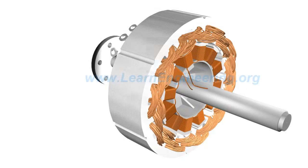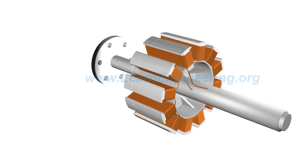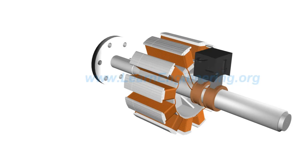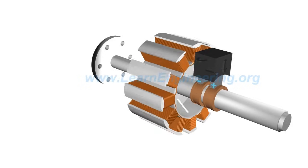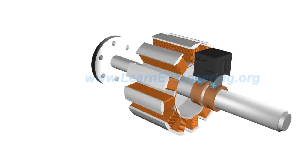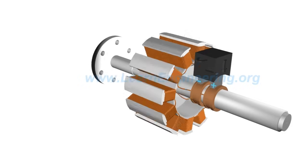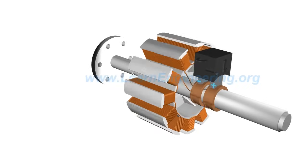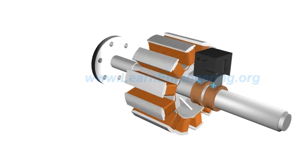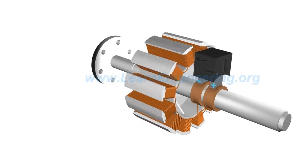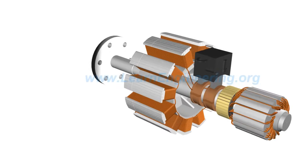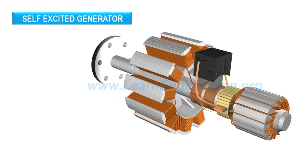DC current is supplied to the rotor via a pair of slip rings. DC current is supplied either from an external source, or from a small DC generator which is fitted on the same prime mover. Such alternators are called self-excited.